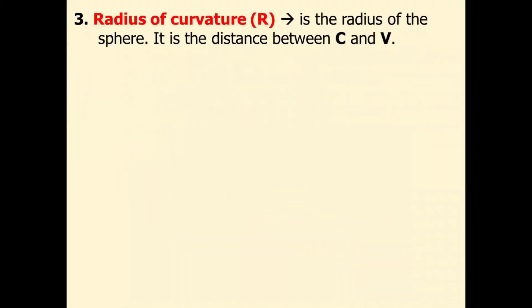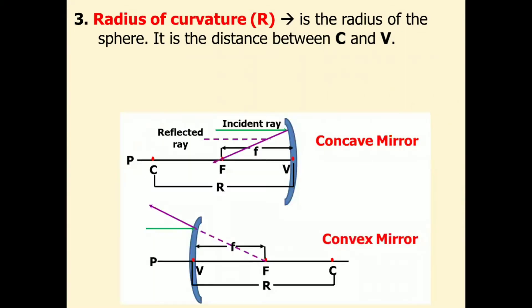The third part is the radius of curvature, or capital R. It is the radius of the sphere. It is the distance between C and V. By description, here's the radius of curvature.